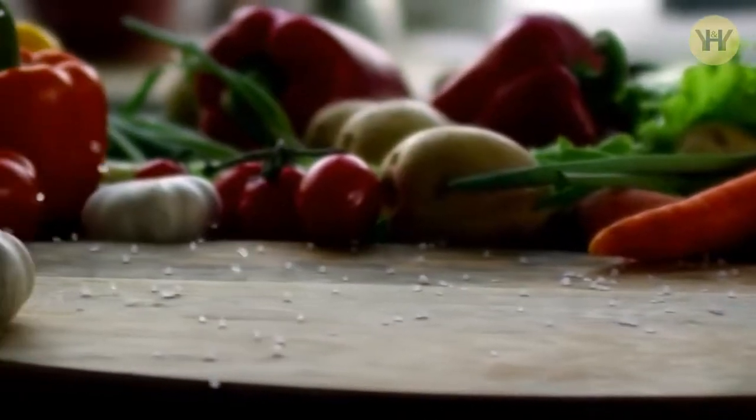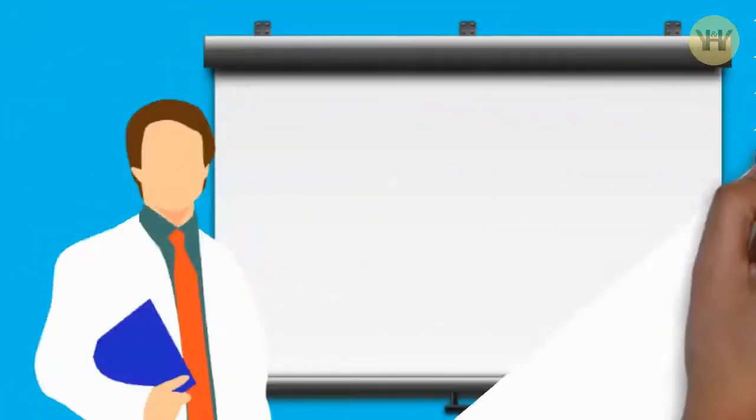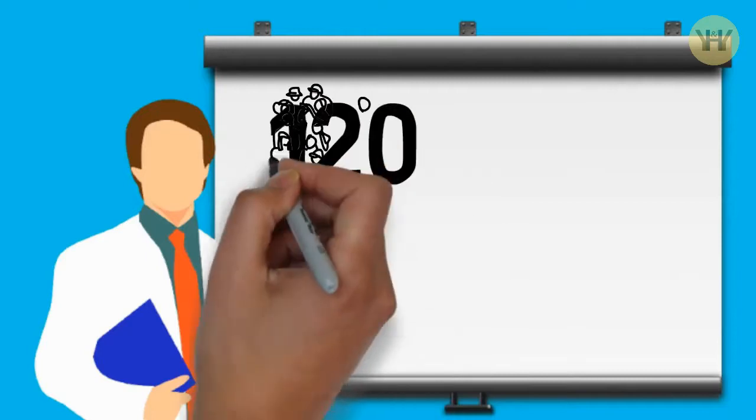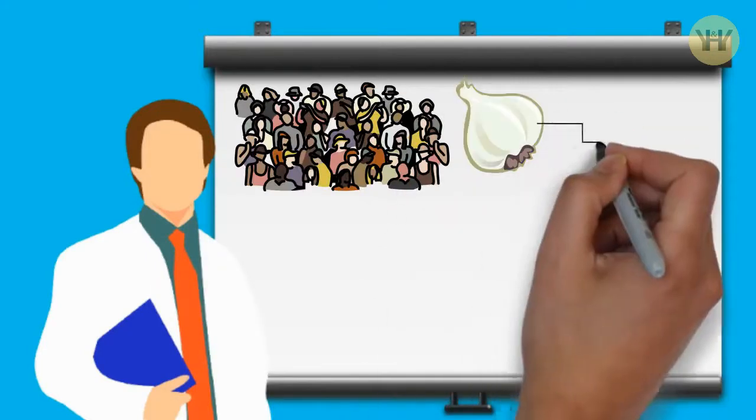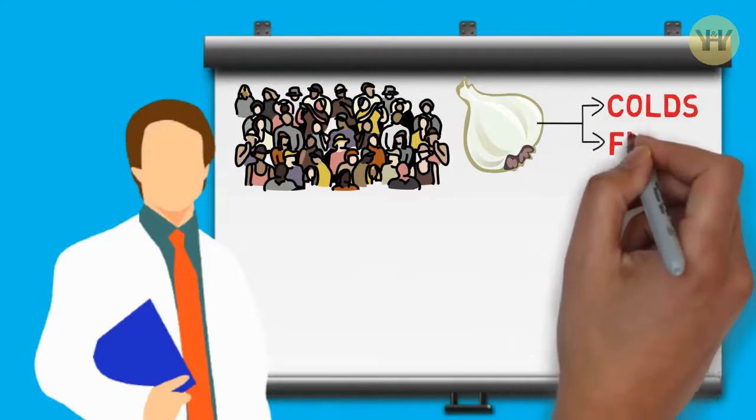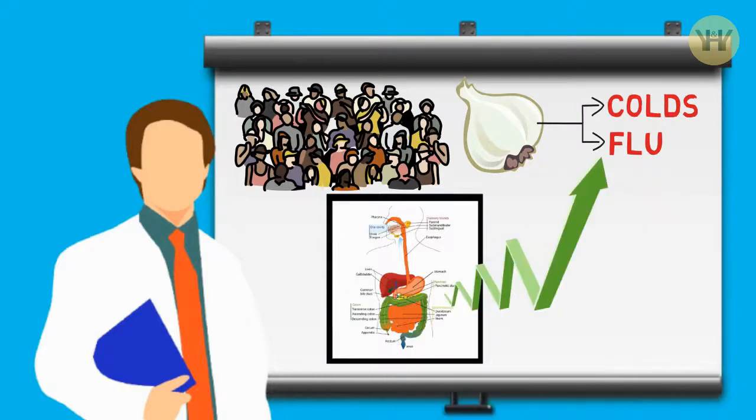Garlics are known to boost the function of the immune system. In a study of 120 individuals, it was found that old or aged garlic extract reduced the severity of colds and flu by increasing the number of immune cells and boosting the immune system.